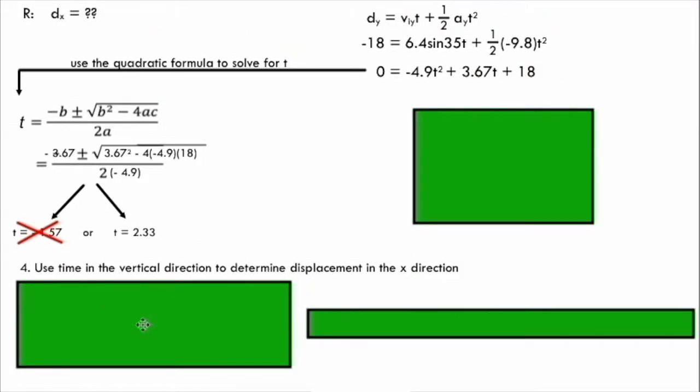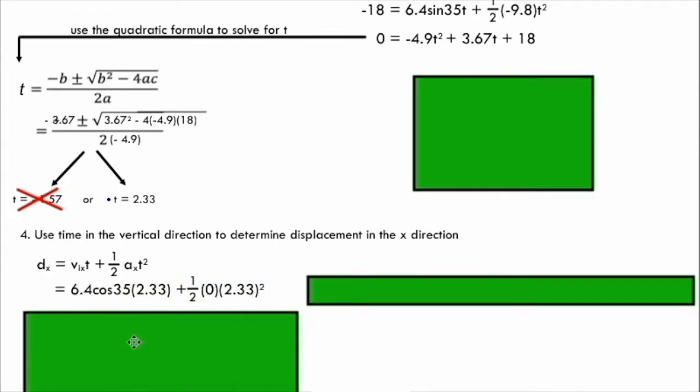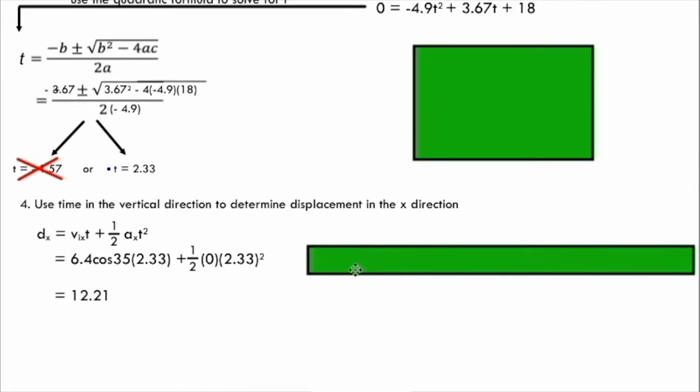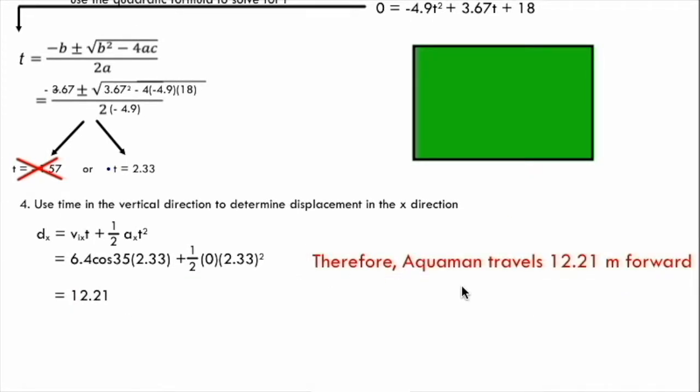Going back to what I'm given, I now have enough information that I can use my vix, my ax, my t here to solve for dx. I'm going to use the same formula as I used before. This time I'm going to break it down into the x direction. Okay, so substituting everything that I'm given, you can see here I can easily solve for dx. I get 12.21, and I can conclude that Aquaman is going to travel 12.21 meters in the forward direction before hitting the ocean.